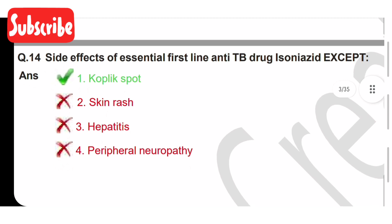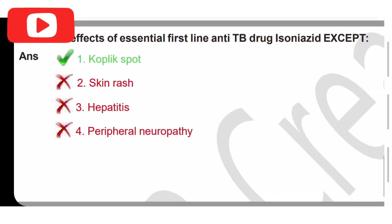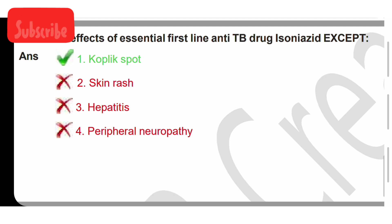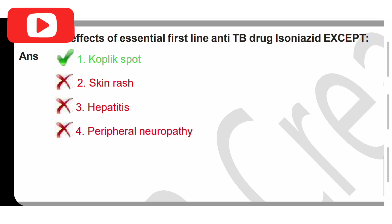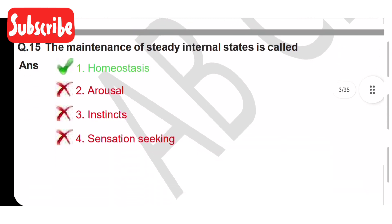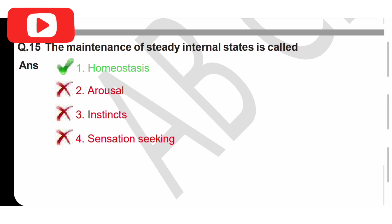Side effects of the essential first-line anti-TB drug isoniazid, except: option two is skin rash, option three is hepatitis, option four is peripheral neuropathy. Option one is the correct answer.